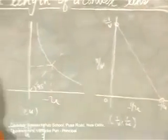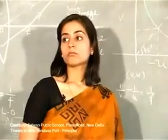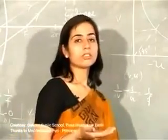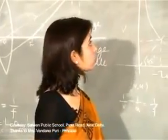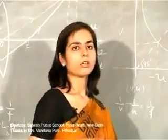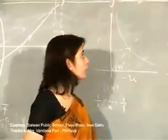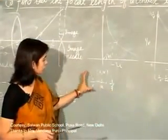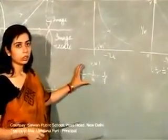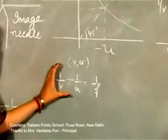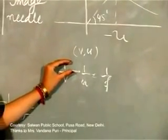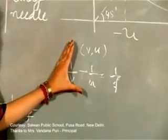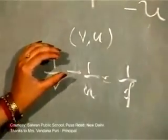Student: How can we distinguish between a convex and a concave lens just by looking at it and not touching it? Teacher: That's a very appropriate question. If you cannot feel the surface of the lens, the best way is to keep the lens over any written object or printed page. If the image appears slightly enlarged, the lens is convex. If the image is diminished, the lens is concave. If the print neither gets diminished nor enlarged, the object may be a plain glass slab or simple glass.